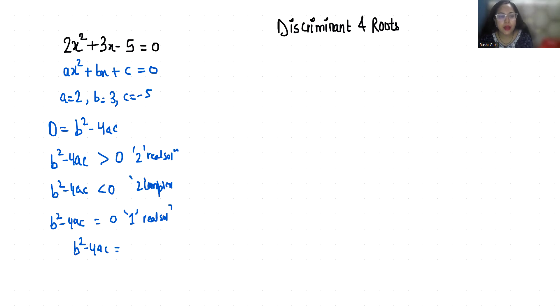So let's check. b² - 4ac: the value of b is 3, so 3² - 4 × 2 × (-5). 3² is 9, minus minus is plus, 4 × 2 is 8, 8 × 5 is 40, so this is 49, positive 49, which means greater than 0, so two real solutions exist.